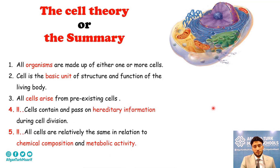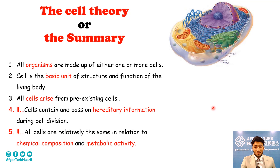The cell theory — the summary. After studying this lesson, we can summarize the entire content into five sentences. First, all organisms are made up of either one or more cells. Second, cell is the basic unit of structure and function of the living body. Third, all cells arise from pre-existing cells.